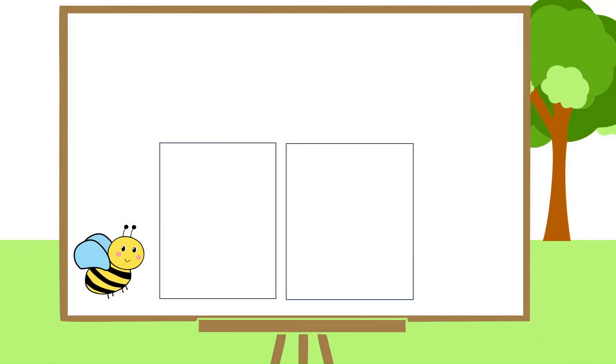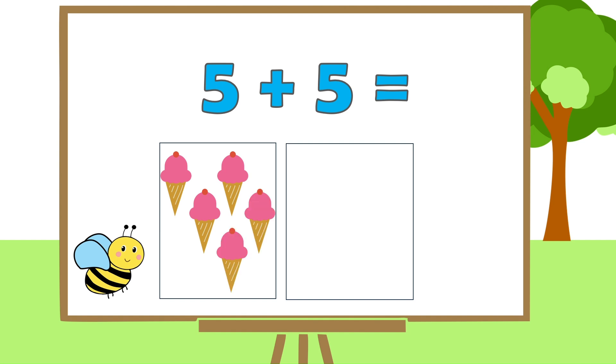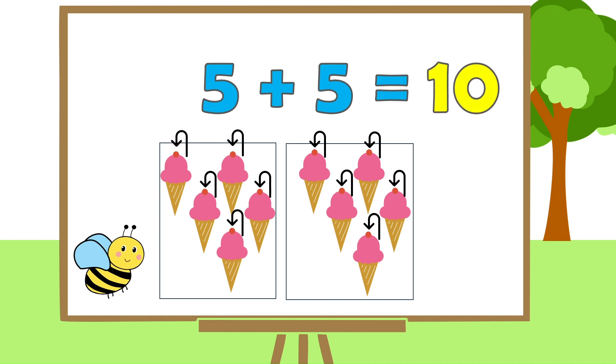Here's the last one. Can you tell me what 5 plus 5 is? 5 ice creams under 5. And 5 under the other number 5. Now, can you count them all? 1, 2, 3, 4, 5, 6, 7, 8, 9, 10. So, 5 plus 5 is? 10. You did a great job!